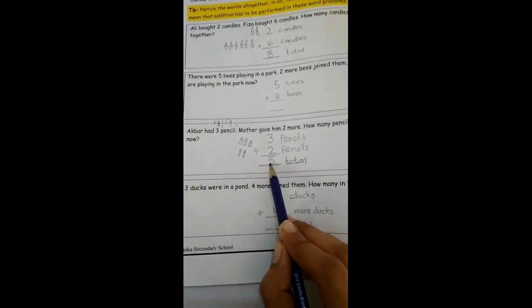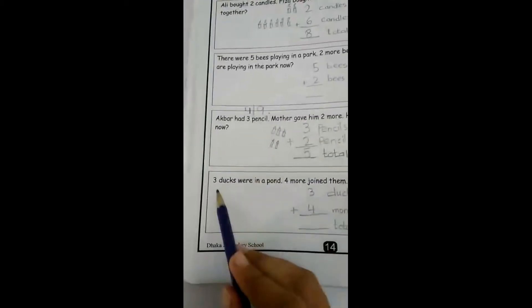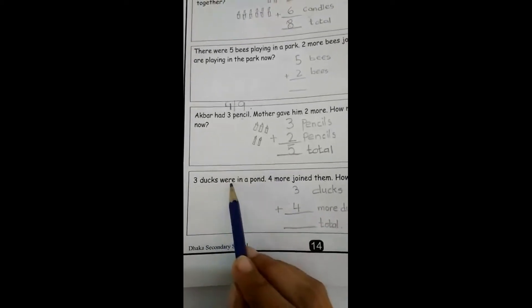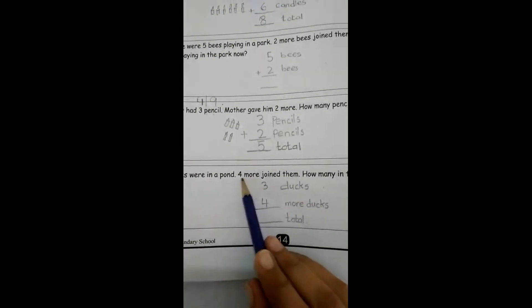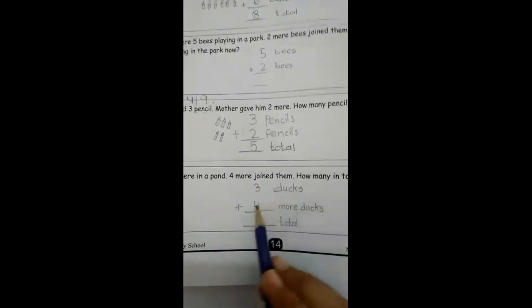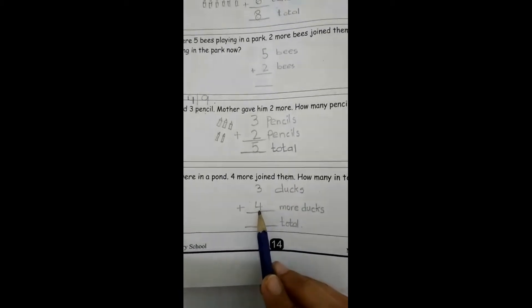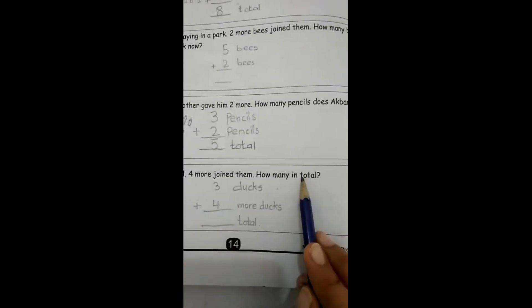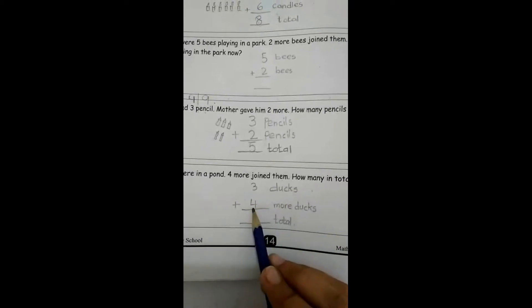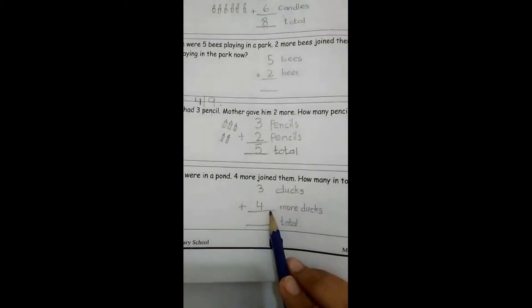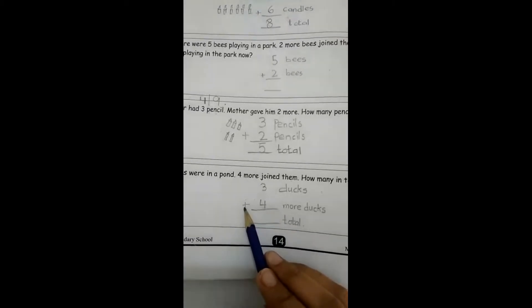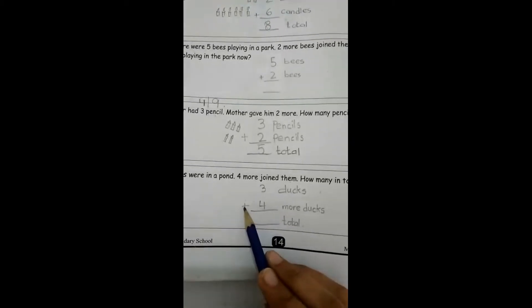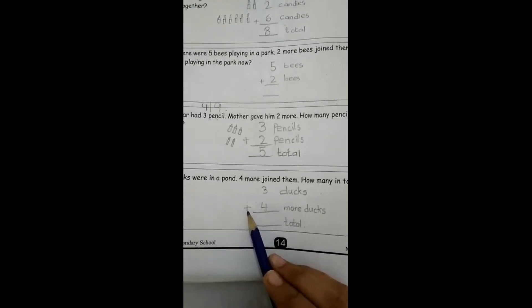Now second question is: Three ducks were in a pond. تین ducks جو ہیں وہ pond میں ہیں ایک تالاب میں ہیں. Four more joined them. چار more ducks نے انہیں join کر لیا. How many in total? اب کتنی ducks ہیں تالاب میں? You will solve it by yourself.